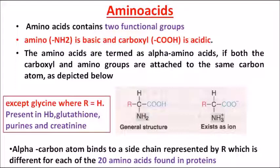Looking at the picture, the general structure of an amino acid is shown. You can see NH2, which is the basic structure, and the COOH carboxyl group, which is the acidic structure. Generally there are around 20 amino acids found in proteins. An exception to this general structure is glycine — in glycine, the R component is substituted by a hydrogen atom.